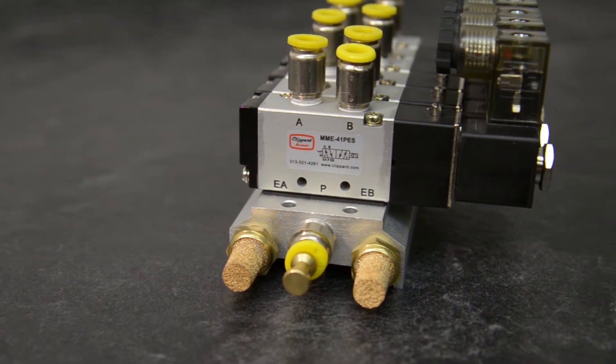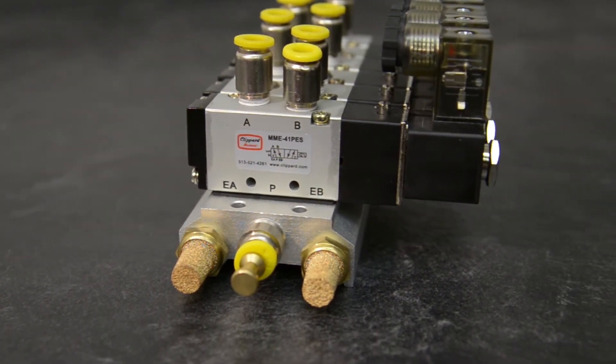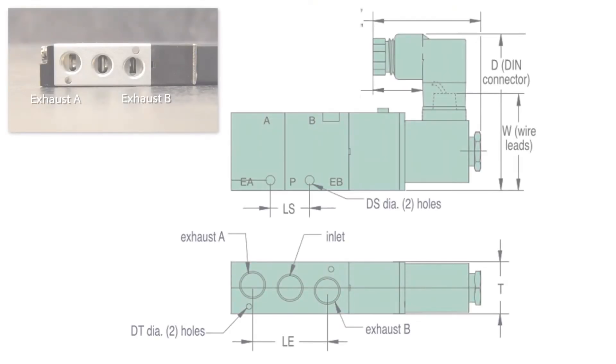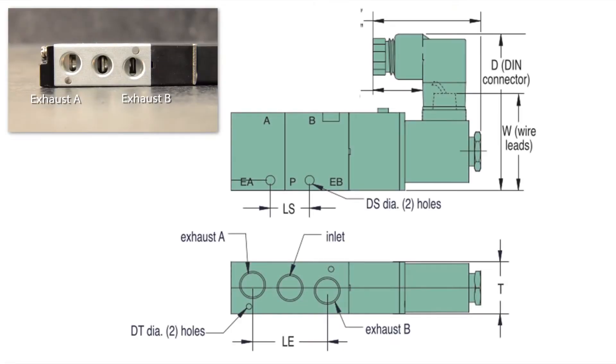Before we mount any of the valves, let's identify the valve functions we want and make the needed modifications. Looking at a Maximatic four-way valve schematic, we can see the individual flow paths and map out what ports we need and which ones we need to block.